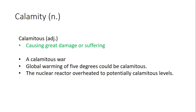Calamitous is the adjective form of calamity, meaning causing great damage or suffering. Examples: Number one, a calamitous war. Number two, global warming of five degrees could be calamitous. Number three, the nuclear reactor overheated to potentially calamitous levels.